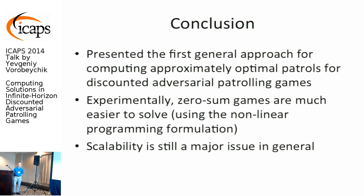Q: It's very cool work, but optimizing for expectation in terrorist attack scenarios may not be right, since terrorists only get one shot — expectation assumes many repetitions. Would optimizing for something like a weighted combination of expected utility and variance still work? A: That's a really good question. That extension wouldn't be easy directly. However, incorporating risk aversion via a transformation of the utility function would be straightforward, and if the adversary is very risk averse that's actually even more natural.